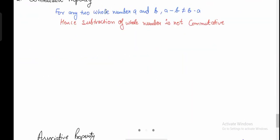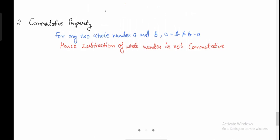What does the commutative property say? It is simpler than the previous property. For any two whole numbers, let's consider 5 and 6. You have to do A minus B. Let's consider 5 as A and 6 as B — A and B could be any values from 0 to infinity. So first I am going to do A minus B.